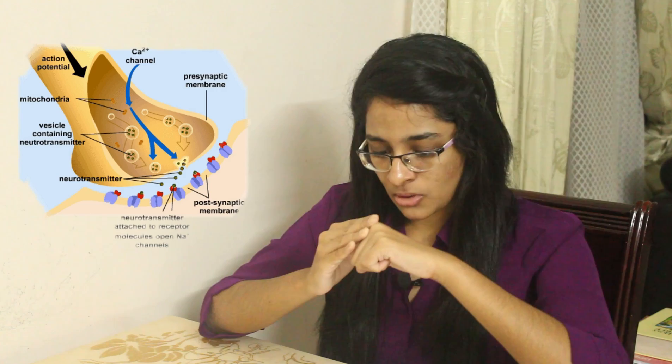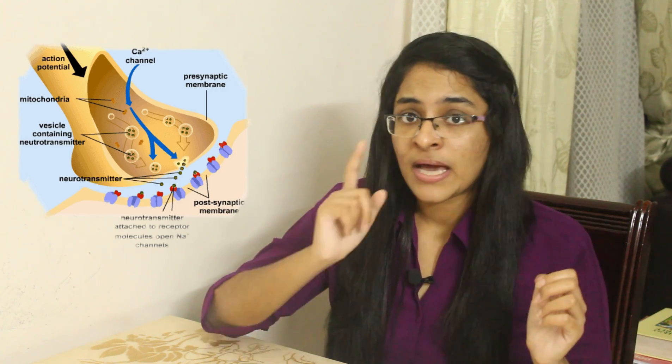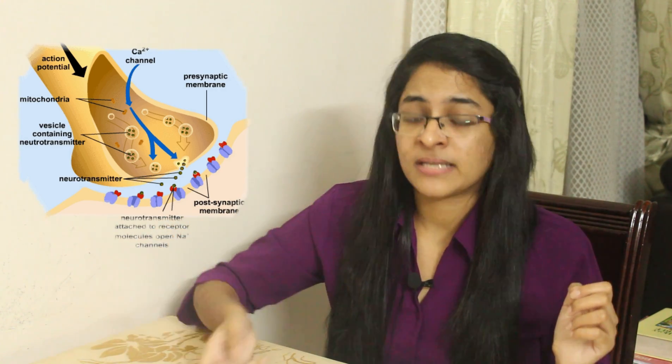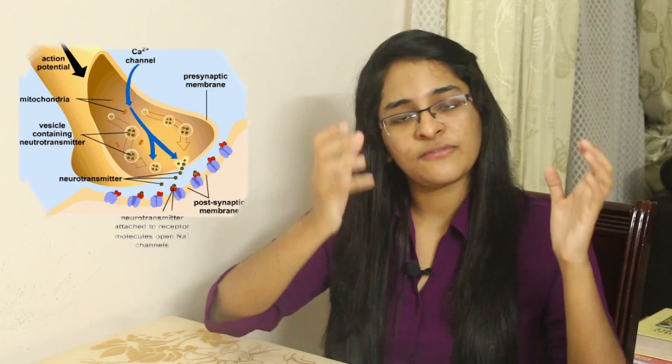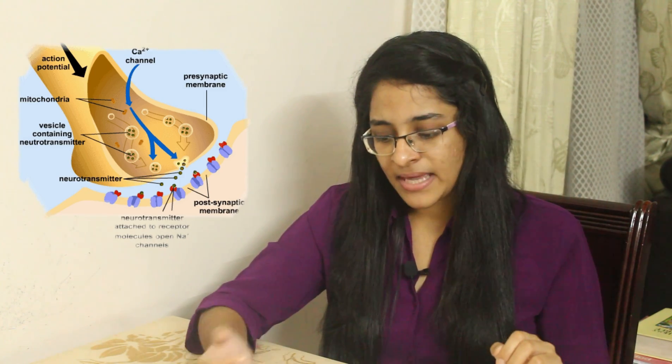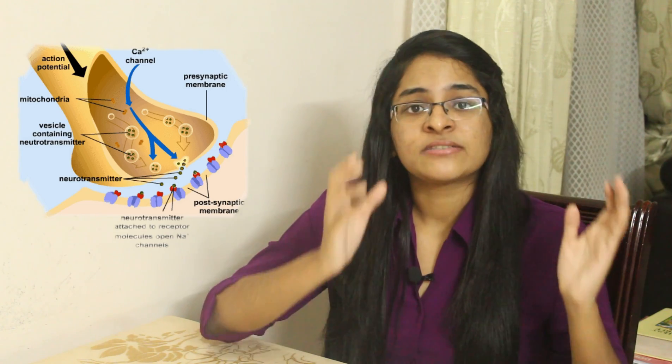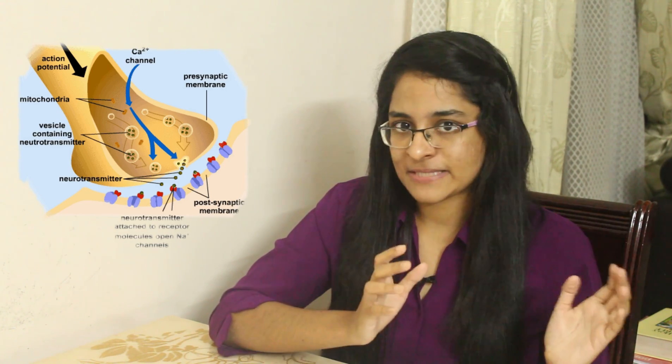After formation of the acetylcholine-receptor complex, there is opening of sodium channels and influx of sodium ions from the extracellular fluid. This leads to development of excitatory postsynaptic potential (EPSP). Following EPSP, there is opening of sodium channels in the initial segment of the axon, influx of sodium ions, and development of action potential, which then spreads through the axon of the postsynaptic neuron.